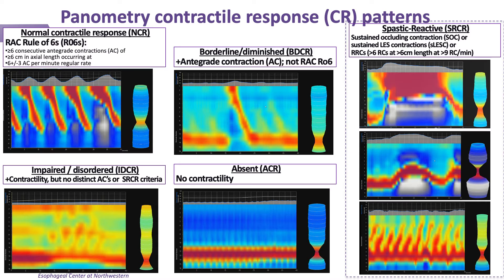With regard to secondary peristalsis, specific patterns on the esophageal contractile response to distension are observed. We derived a scheme amenable to simple pattern recognition, but also to reflect a pathologic transition from normal to absent. Asymptomatic controls and the majority of patients with normal peristalsis on HRM will have a normal or borderline contractile response that includes antegrade contractions — the RAC pattern reflecting normal.